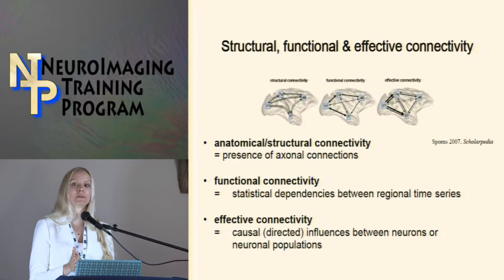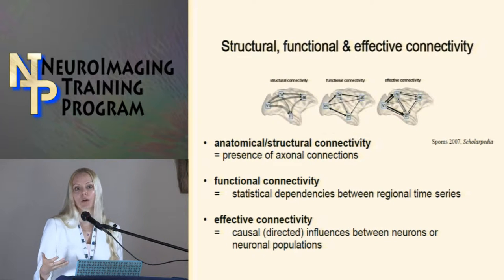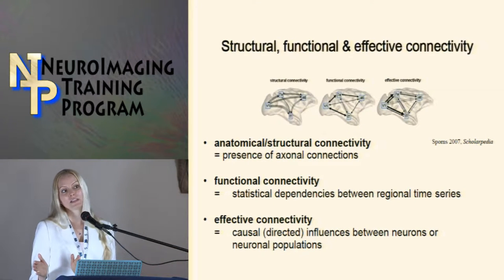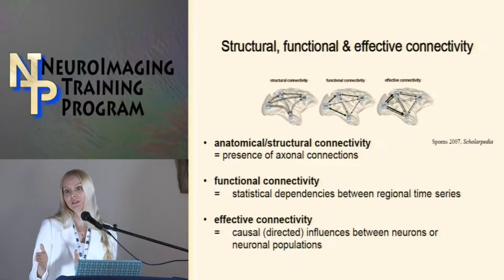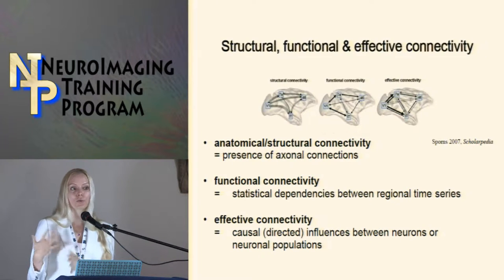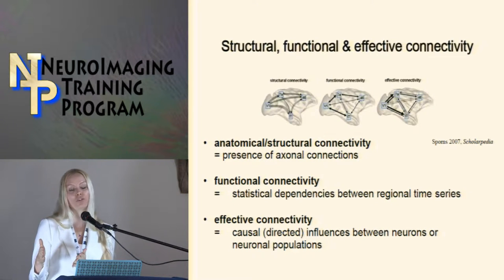In the context of graph theory, functional connectivity looks at an undirected network — the relationship among two different time series, be they from regions of interest or from networks. We're saying there is some sort of relationship between these entities, but we're not saying which way it goes, which one affects the other. There's no causal interpretation — we don't know which is the driving force behind the processes.